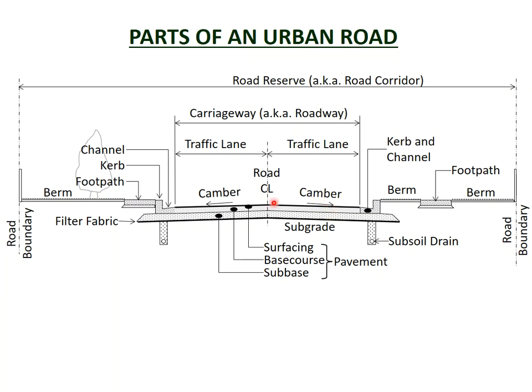Water on the road surface reduces the grip that vehicle tyres have on the road, so the road surface needs to be as clear of water as possible. Therefore it's sloped from the centre of the road down to the kerb and channel, so that water flows away. This slope is called the camber, and most sealed roads have a camber of about 3% — that is, the road drops 3 units for every 100 units across.